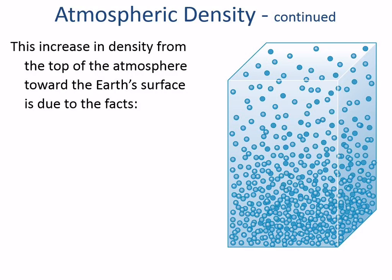Gases are rambunctious — they have a lot of motion. The gas particles are creating what we call pressure. I want you to be able to relate density and pressure. Down here near the surface, it's very dense and has high pressure. Up at altitude, where it's very sparse, it has low pressure. This is a column of air where the Earth's surface is at the bottom and climbing a mountain takes you upward.